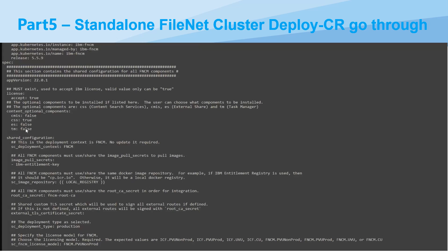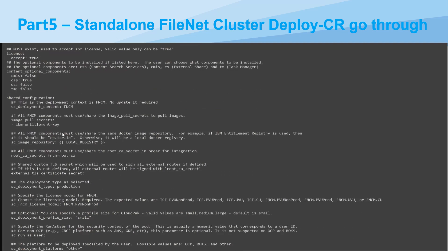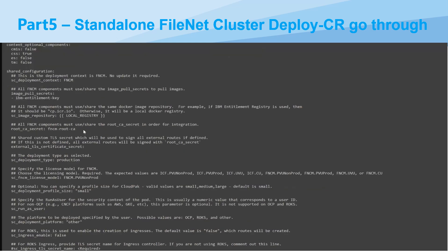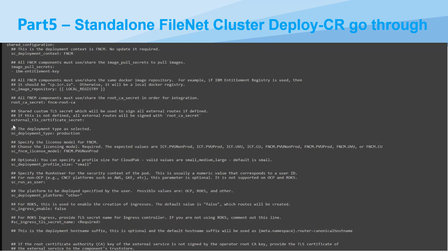External share and task manager are set to false. In the shared configuration, the IBM pull secret we put is 'ibm-entitlement-key'. This is the key we just set. Also the image repository is pointing to the local registry. And for the secret trust store, I will go back to that later for the ingress certificate.